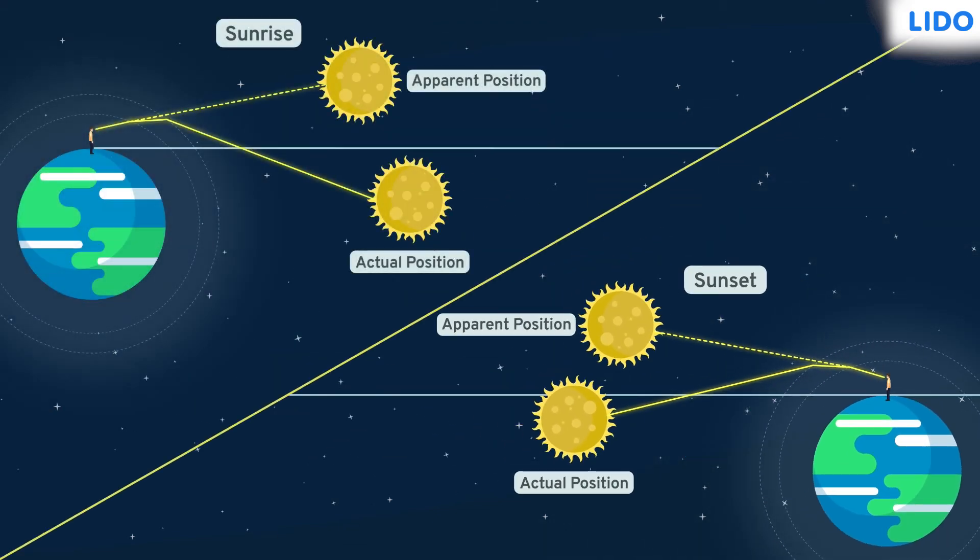Thus, refraction or bending of light causes us to see an early sunrise and a delayed sunset. It was calculated that we see the sunrise 2 minutes early and the sunset 2 minutes later than its actual occurrence.